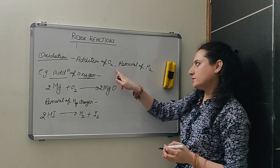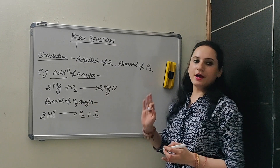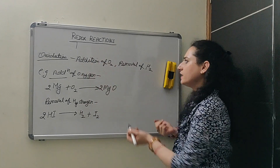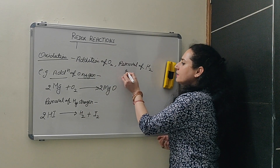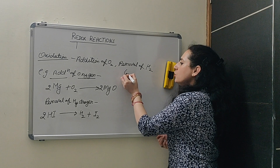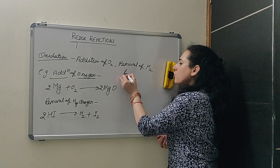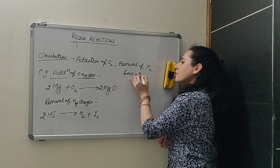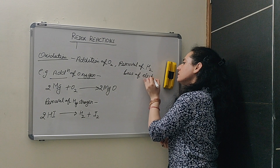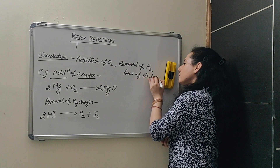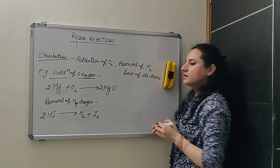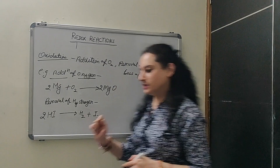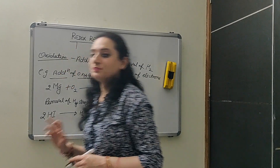So addition of oxygen and removal of hydrogen — that is called oxidation. Another concept: oxidation is also called loss of electrons. If there is loss of electrons, that is also called an oxidation reaction.